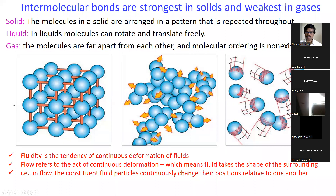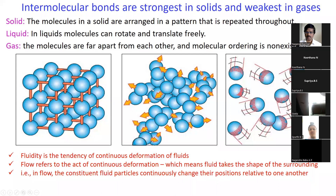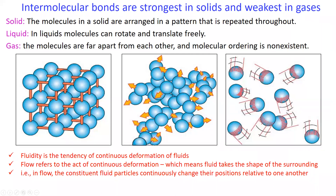In solids, molecules occupy fixed positions. In the intermediate state — liquids — molecules can rotate among themselves from one orientation to another and also translate freely, much more freely compared to solids.